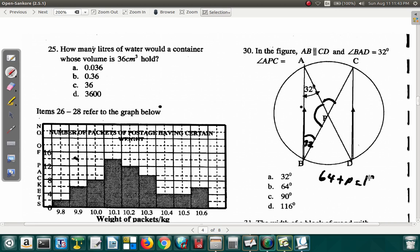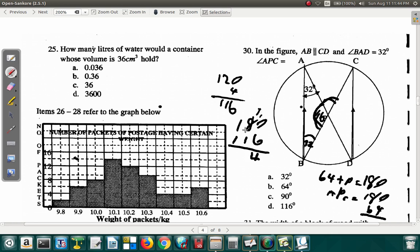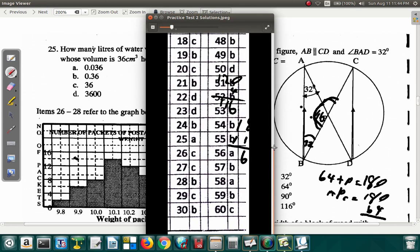So if you say APC is 180 minus 64, what do you get for that? 180 minus 64, let me drop 60, so I have 120 minus 4, I get 116. This is 116. And then remember all of this angle is on a straight line, so it's 180. So 180 minus 116, you get 64. So it will be 64, B. So question 30 says B.